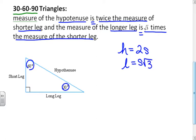What is this short leg and long leg business? Remember from the first unit when we talked about the relationships of angles and sides: the smallest angle has the smallest side opposite it. The 30-degree angle is opposite the short leg, the 60-degree angle is opposite the long leg, and the hypotenuse is opposite the biggest angle, which is 90 degrees. So that's how we set up our problems.